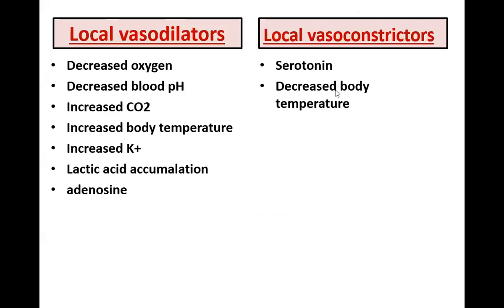The humoral mechanism involves various vasodilators and vasoconstrictors released locally where blood flow regulation needs to be increased or decreased. The local vasodilators are: decreased oxygen, decreased blood pH (increased H+), increased carbon dioxide, increased body temperature, increased potassium ions, increased lactic acid accumulation, and adenosine. Local vasoconstrictors are serotonin and decreased body temperature.